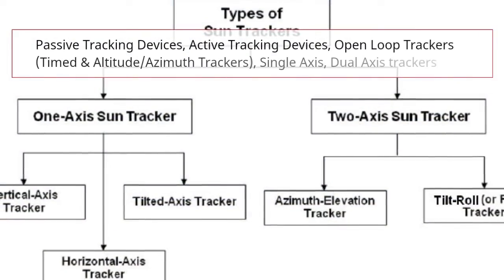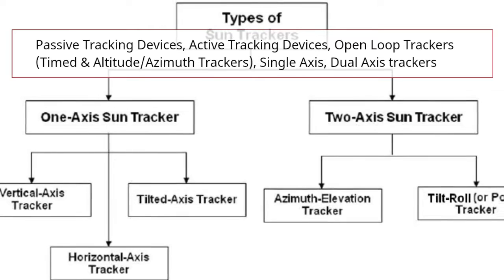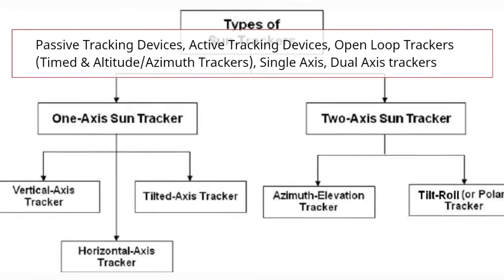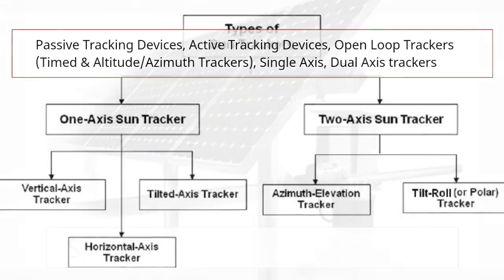Now we're going to discuss the types of solar tracking systems. There are passive tracking devices, active tracking devices, open loop trackers which are timed and altitude trackers, and single and dual axis trackers.